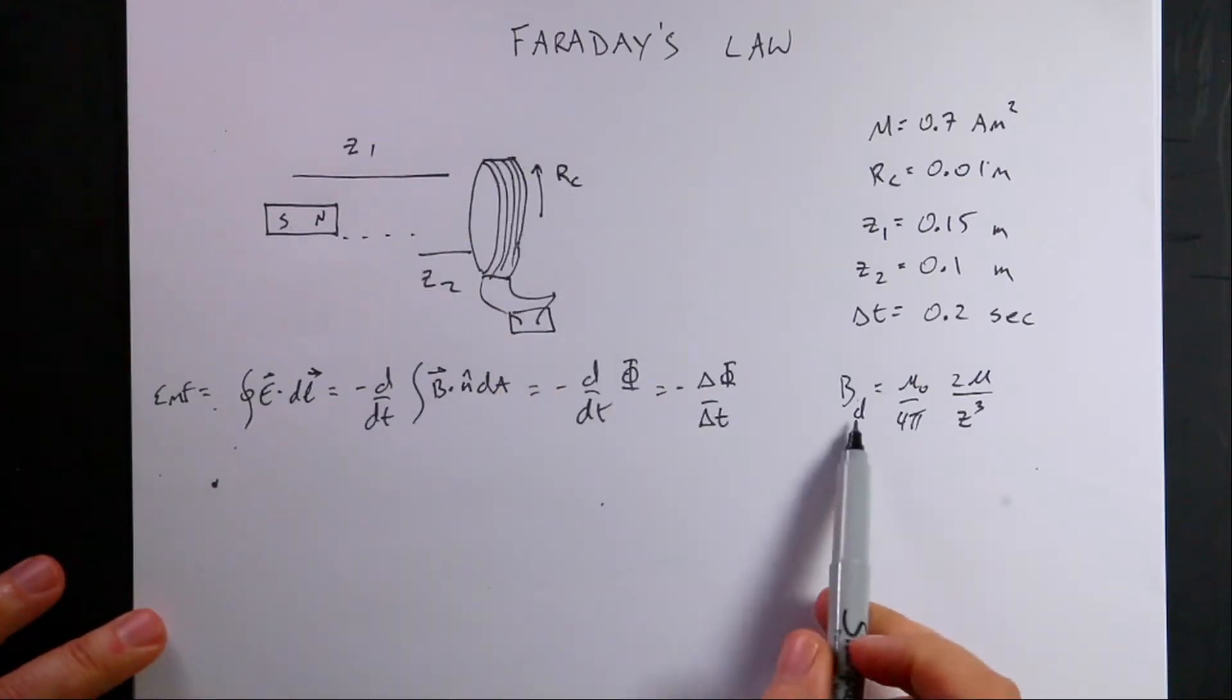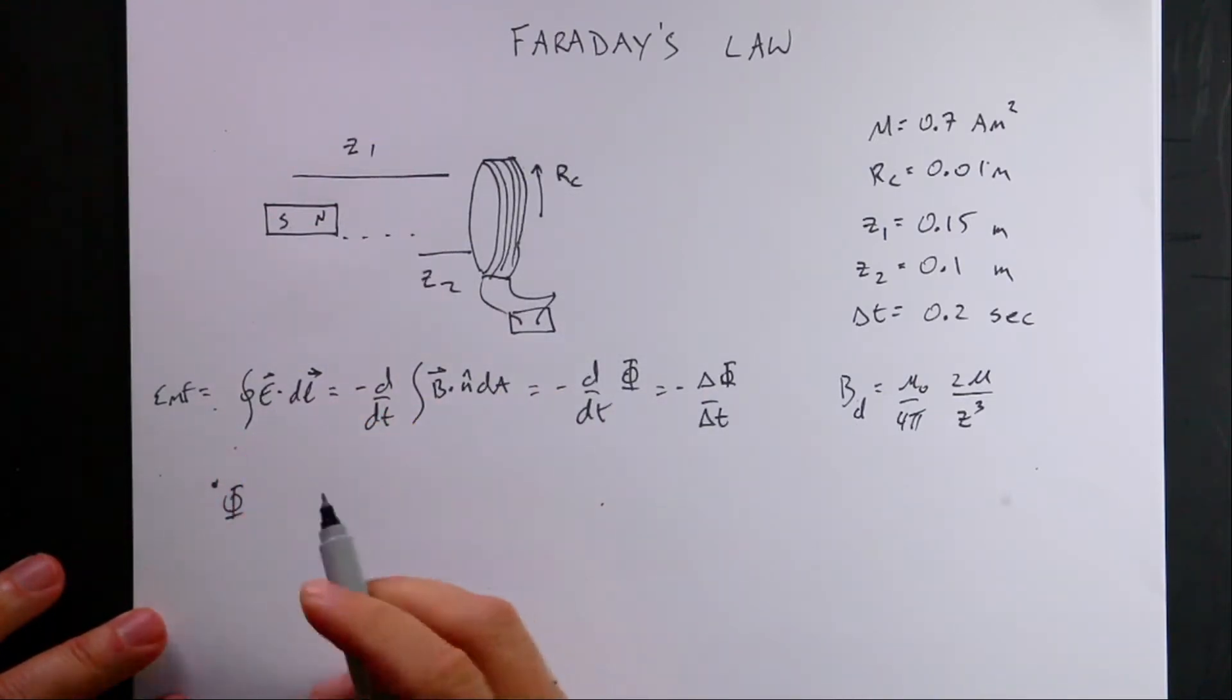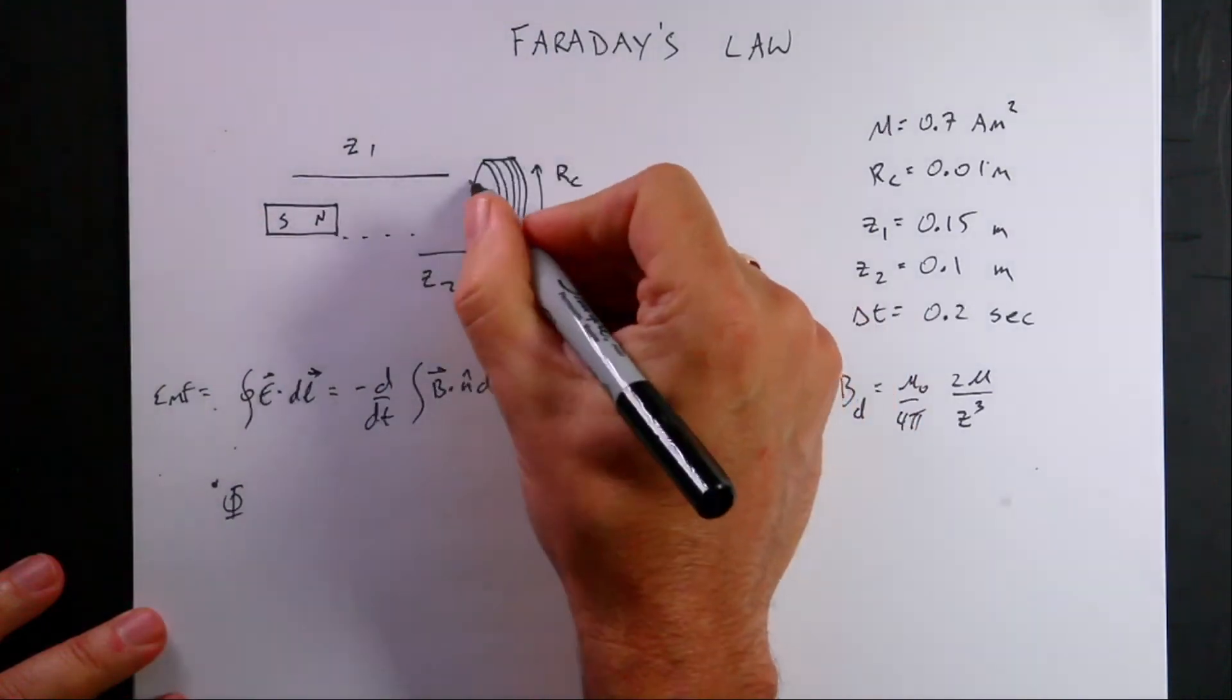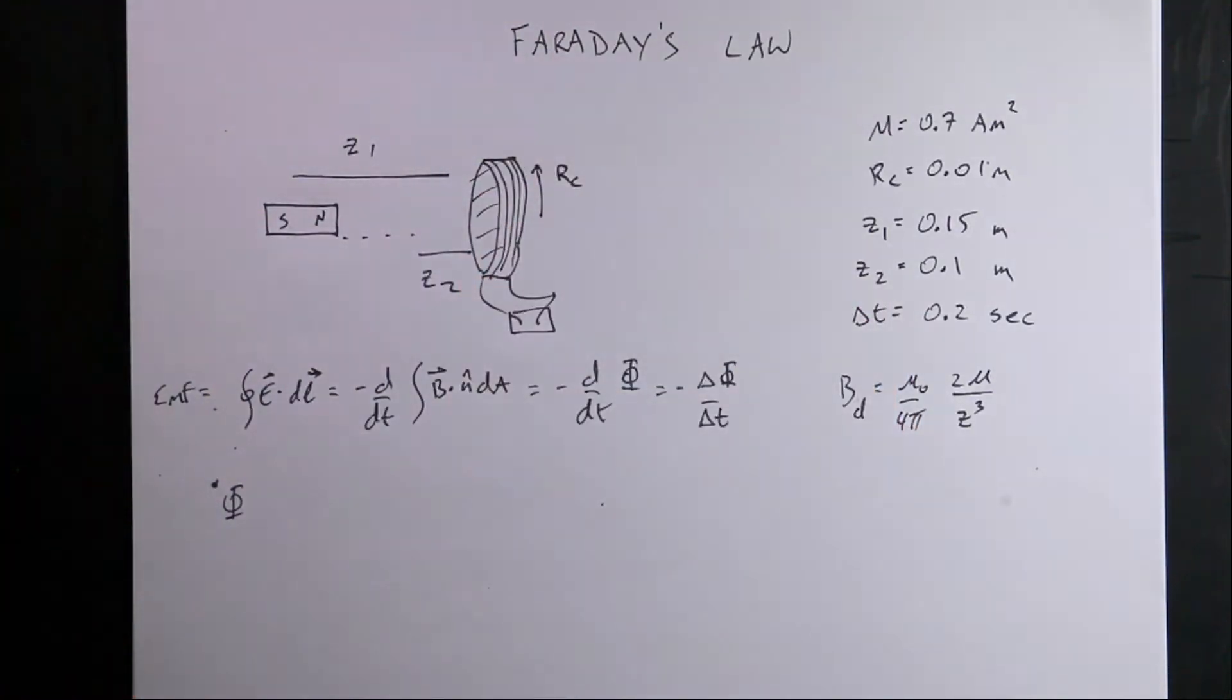So now to calculate the flux, I'm going to assume that the magnetic field is constant over this region, which is not true. But otherwise it would get really difficult to do. I think I could do this numerically, and I want to do this numerically. But for now, let's just do this as an approximation.